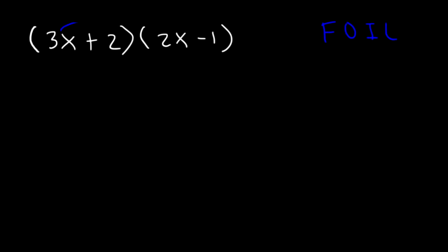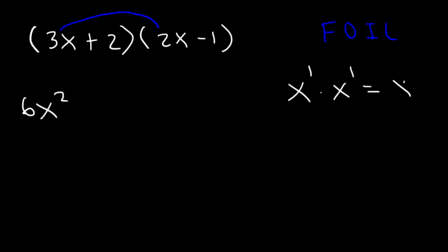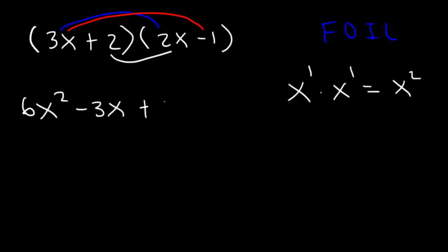So let's multiply the first two terms. 3x times 2x is 6x squared. For those of you who are not sure about that: 3 times 2 is 6, x times x — x is really x to the first power, and 1 plus 1 is 2, so you get x squared. Next, we can multiply 3x times negative 1, that's going to be negative 3x. And then we can multiply the 2 on the inside — 2 times 2x — that's positive 4x.